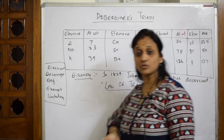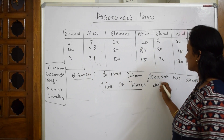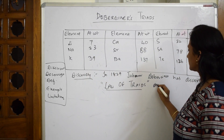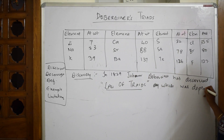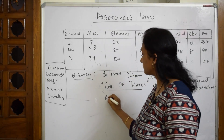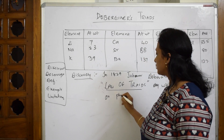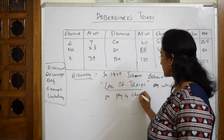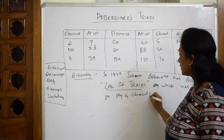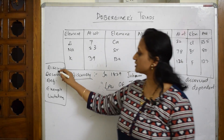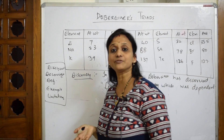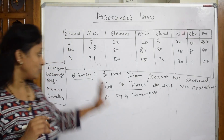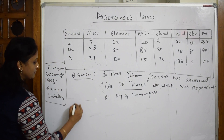The Law of Triads was dependent on physical and chemical properties — specifically, similar properties. I've written the introduction. Now I need to write the definition. Let me first explain what he did and then we'll come to the definition.